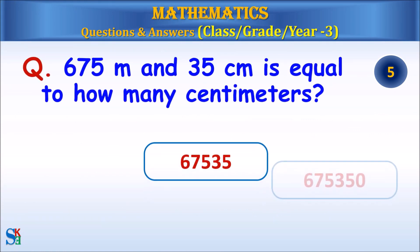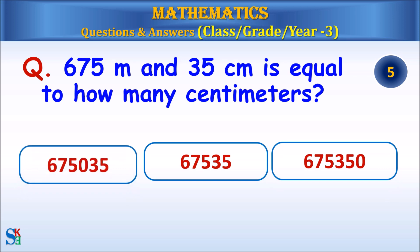675 meters and 35 centimeters is equal to how many centimeters?